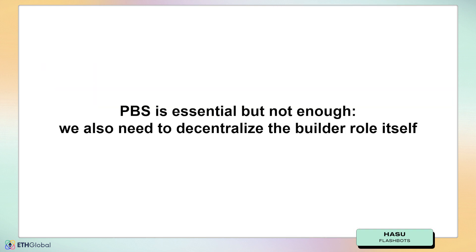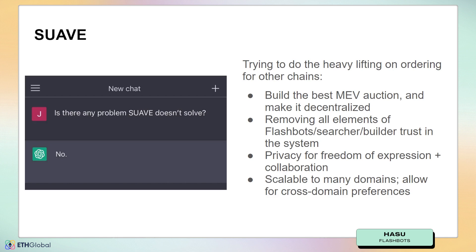And so that's why PBS is essential, but it's not enough. We also need to look into decentralizing the builder role itself. That's what we're trying to do with SUAVE. There are other proposals as well, but the idea is building the best MEV auction and making it decentralized, because that's what allows us to do the heavy lifting on ordering for these other chains — removing all elements of trust in Flashbots, searchers, and block builders from the system.